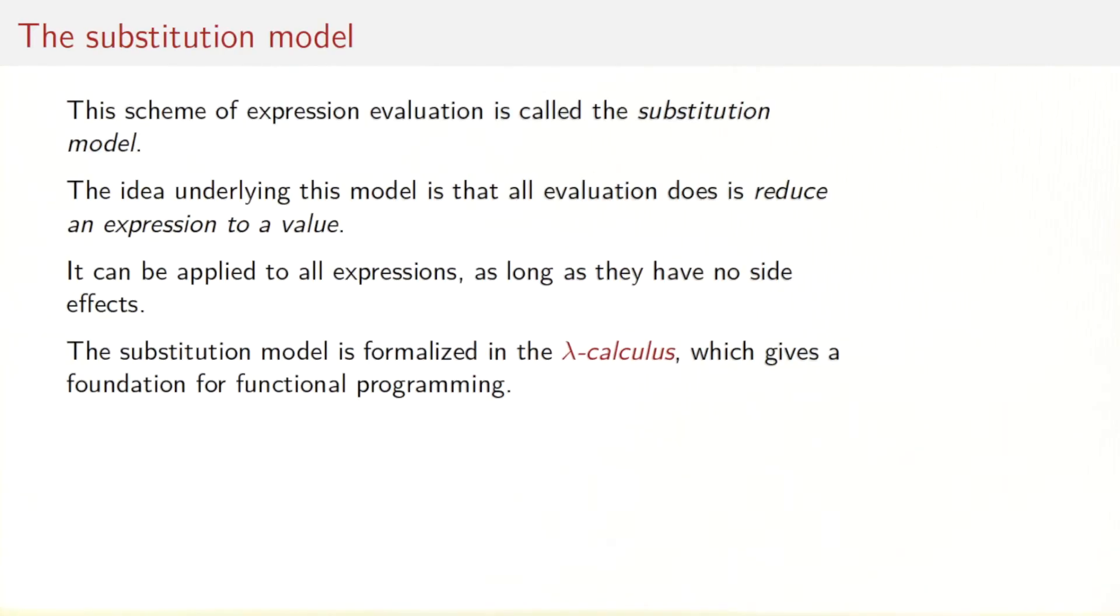This scheme of expression evaluation is called the substitution model. The idea underlying this model is that all evaluation does is reduce an expression to a value. And that reduction can be expressed by a sequence of simple rewriting steps that rewrite the expression term itself until it is a value. Very similar to what you would do in algebraic simplification. Simple as it is, this model is very powerful. In fact, it has been shown that it can express every algorithm, so it's equivalent to what you would call a Turing machine. This has been shown a long time before functional programming, in fact a long time before computers, by a logician called Alonso Church in the lambda calculus.